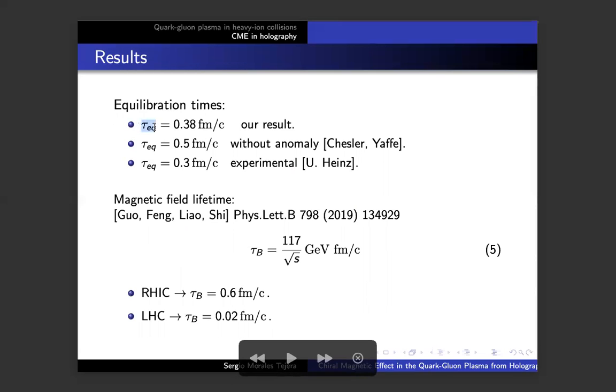So what are the main results we get? First of all, the equilibration times: we find 0.38, which is closer to experiment than the previous estimations made by Chesler and Yaffe in another way. They didn't take into account the effect of the anomaly. The other thing is that we took an estimate of the lifetime of the magnetic field in terms of the energy of the collision, and we find these lifetimes. If we compare them to what we saw back then, we see that LHC will not see anything whatsoever, whereas at RHIC we might have a chance—but it has been shown that you also see nothing at RHIC. So the take-home message is that as you lower the energy, more chance to observe the CME. Thank you very much.